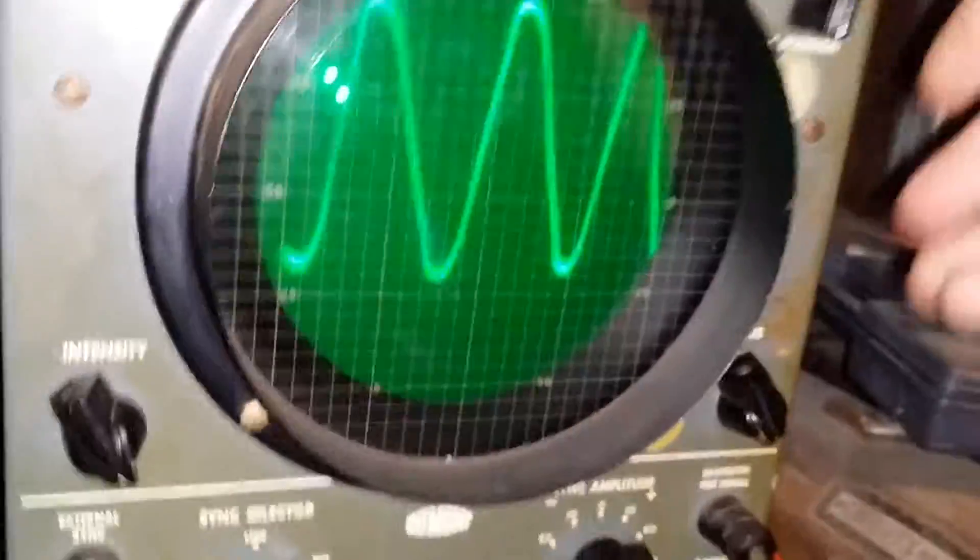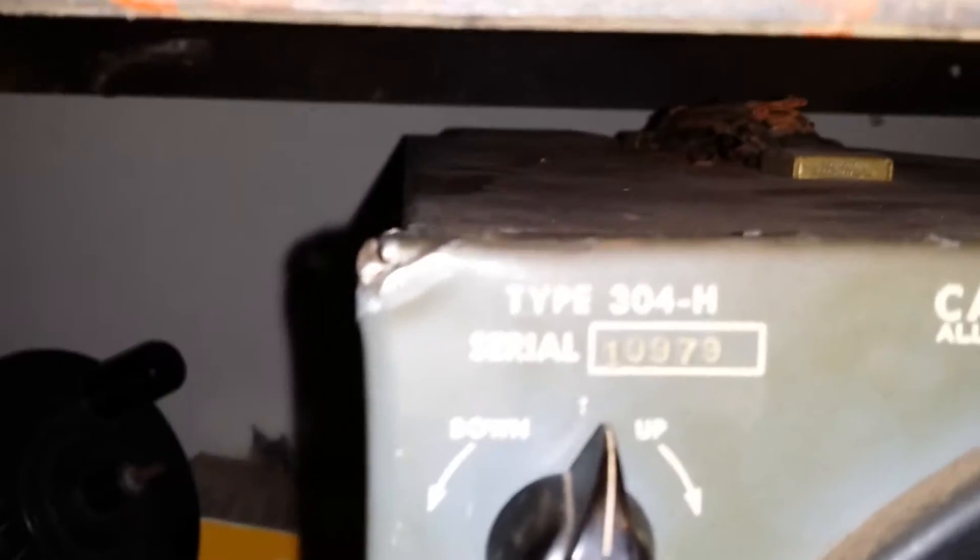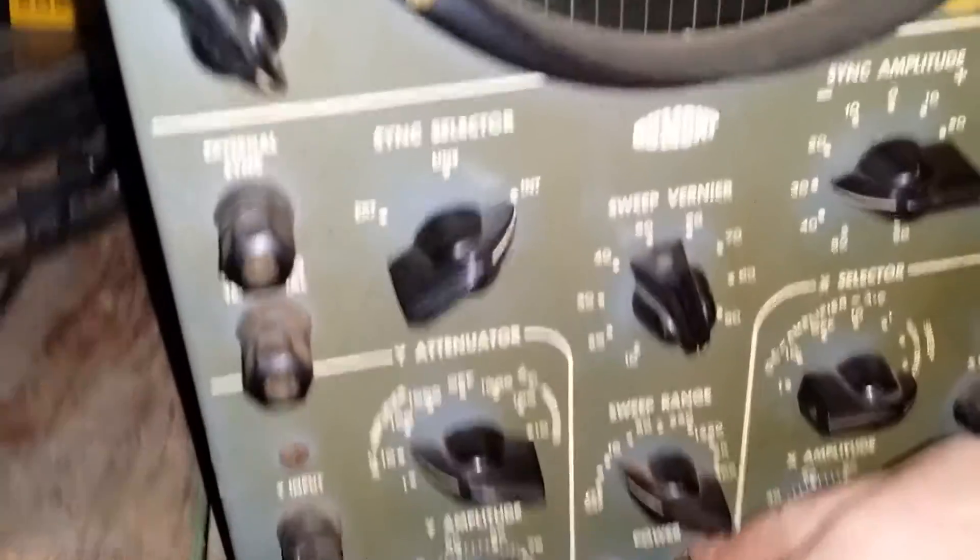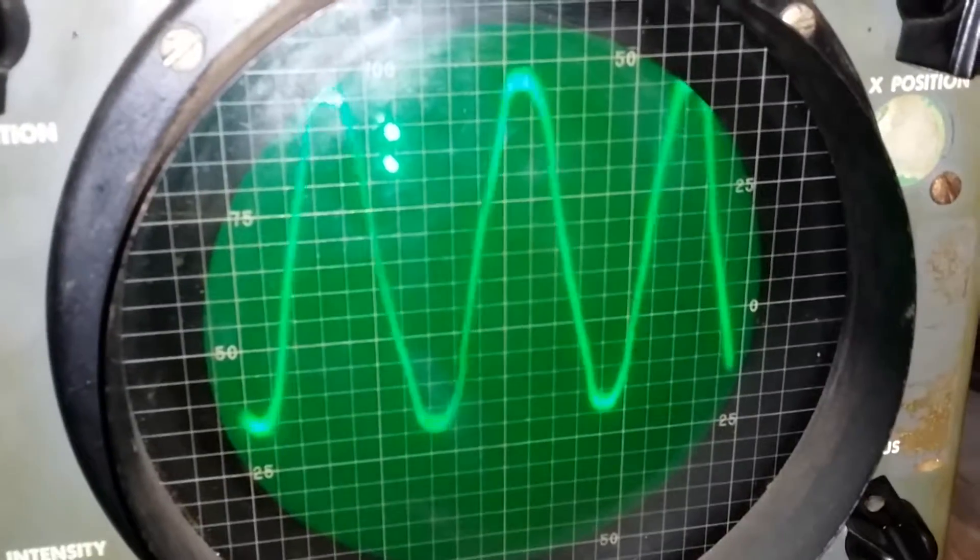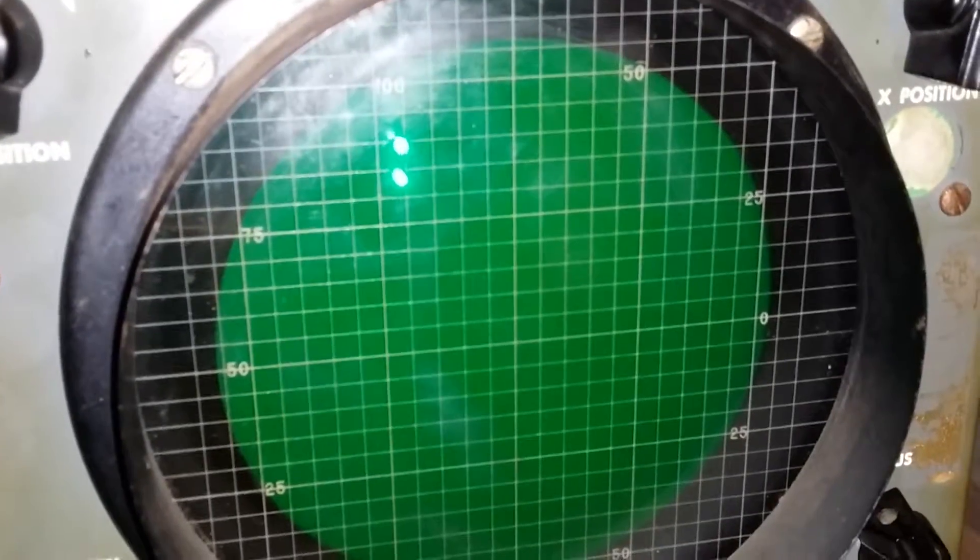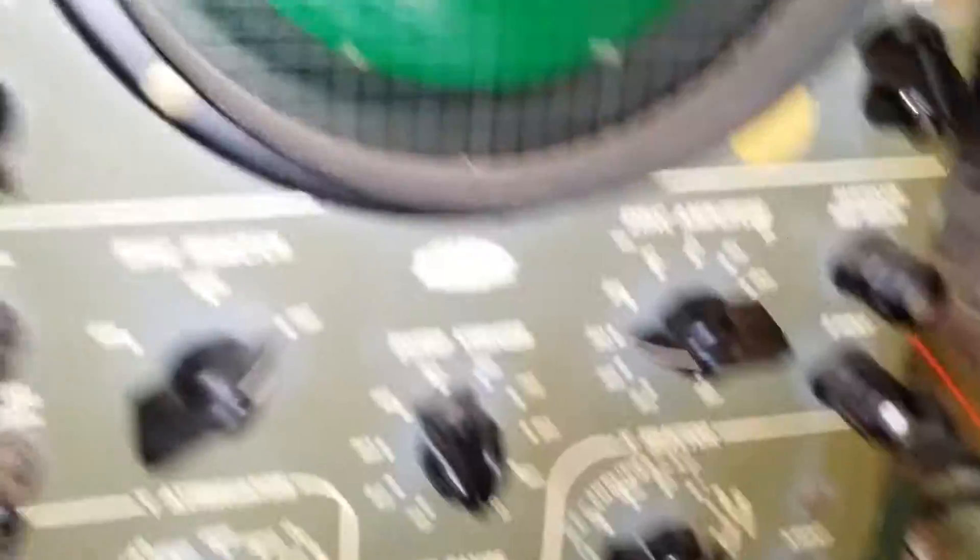So anywho, so yeah, that's the Allen D. Beaumont Laboratories Type 304H oscillograph, or oscilloscope, for modern terms. We're going to power this thing off. This is a little power switch. And yeah, we're going to power this off. Look at that. Super cool. Super cool animation.